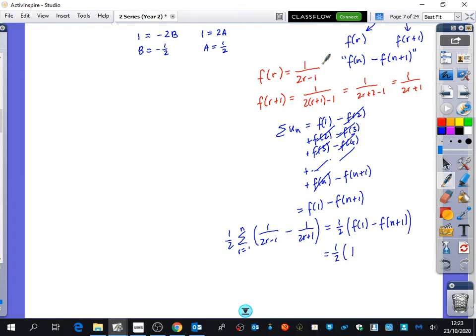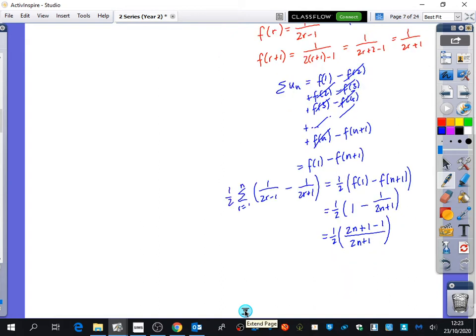And then f of n plus 1 is going to be... Well, we did r plus 1, so it's going to be the same as this one, but just with an n, isn't it? So it's going to be minus 1 over 2n plus 1. So it's just a half of 2n plus 1 minus 1 over 2n plus 1. Am I going too fast? So the numerator is just 2n, and when I half it, I would just get n over 2n plus 1.